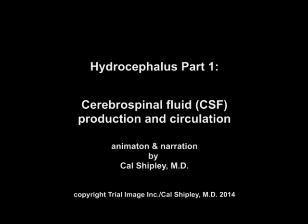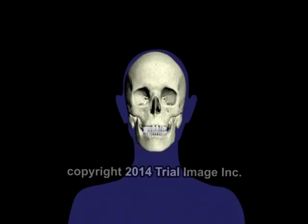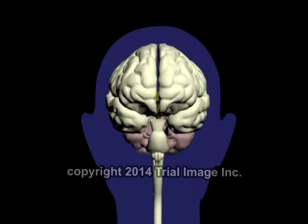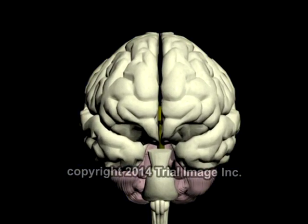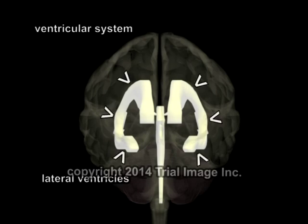This is Dr. Cal Shipley with a review of Cerebrospinal Fluid Production and Circulation. Let's take a look at some anatomy first. The brain and spinal cord are completely surrounded by cerebrospinal fluid, also known as CSF. The CSF fluid layer acts as a mechanical shock absorber, cushioning movements of the brain in head trauma. The CSF also carries nutrients to and waste products away from the brain. Most of the cerebrospinal fluid is produced in a series of chambers known as the ventricles.